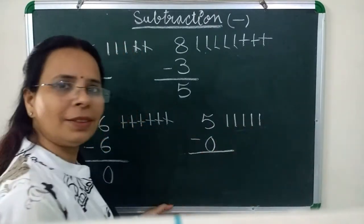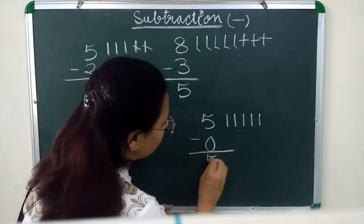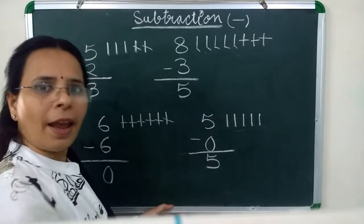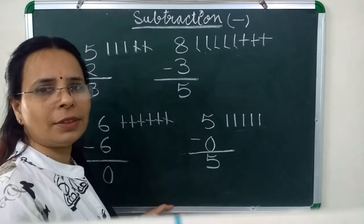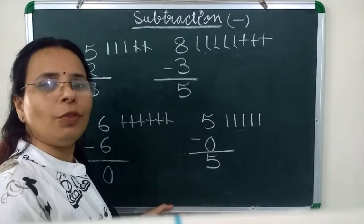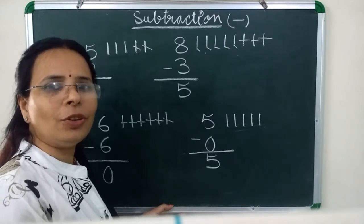5 is our answer. Because 5 pencils are there. So, as it is 5, we will write at the place of answer. Children, I hope you understand the subtraction. We will meet in next video. Thank you.